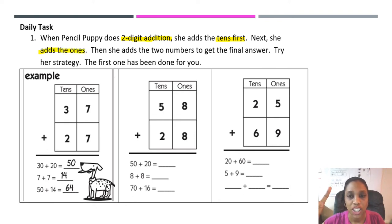So first, she adds the tens. Second, she's going to add the ones. Then she adds the two numbers to get to the final answers. So Pencil Puppy actually used three steps to solve her problem. So let's look at her example.